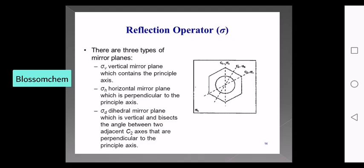Sigma v is the vertical mirror plane. Applying the vertical mirror plane produces an indistinguishable orientation. Reflection results in an indistinguishable orientation.